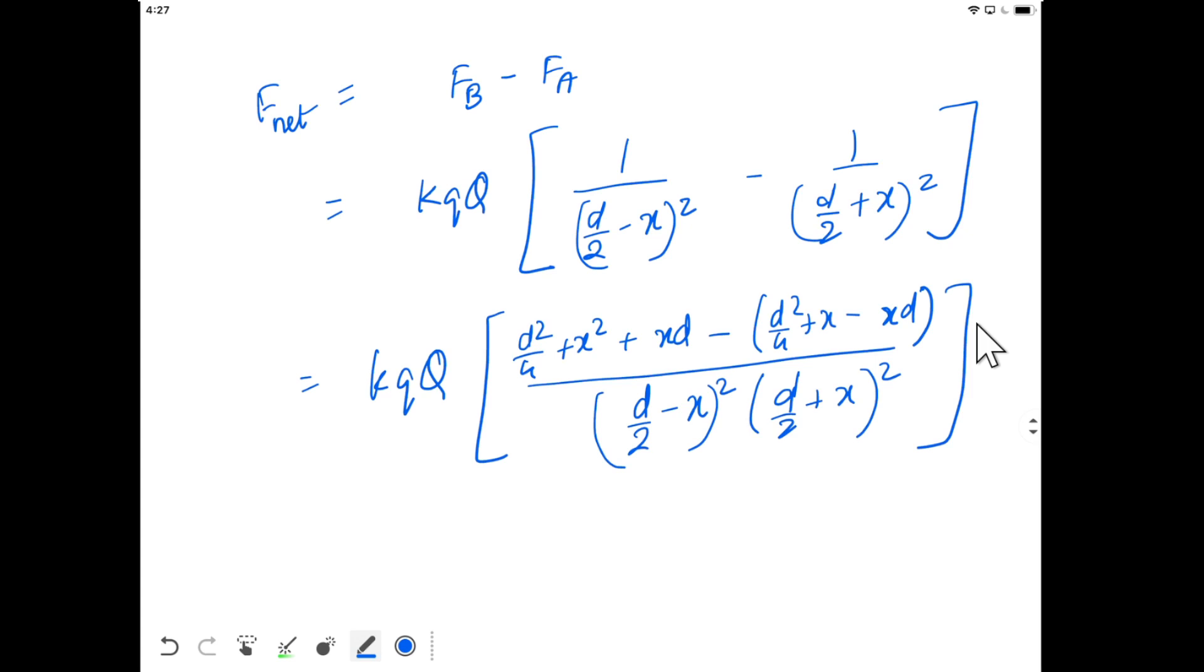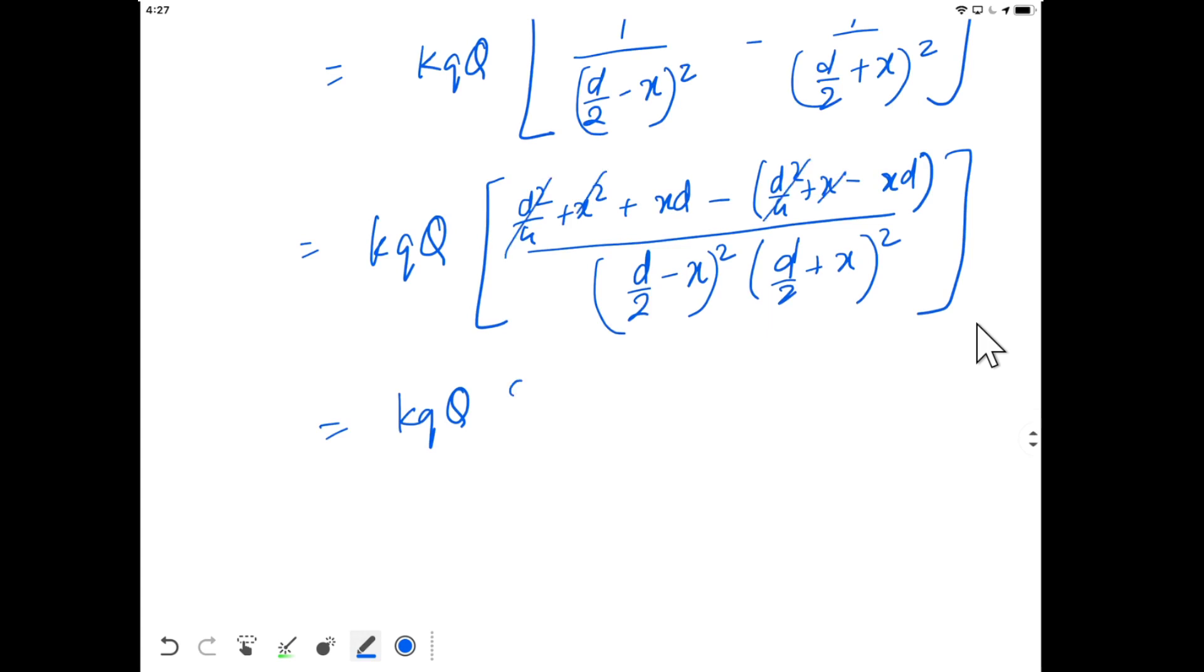...with 2xd in the numerator and (d²/4 - x²)² in the denominator. Using the identity a minus b times a plus b gives a² minus b², this is the net force.